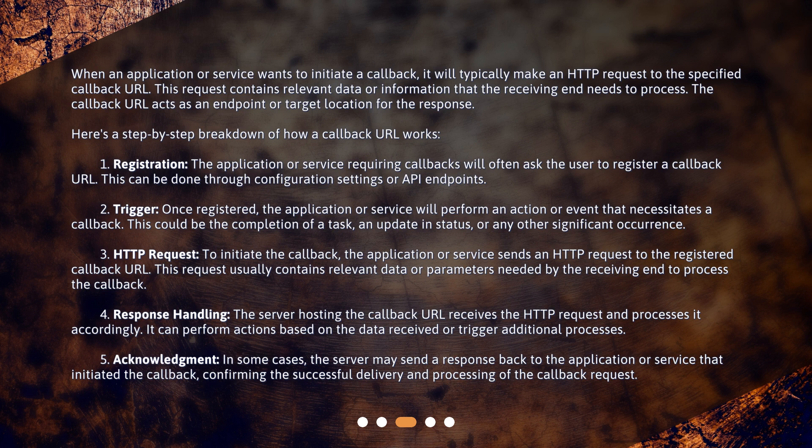Step 1: Registration. The application or service requiring callbacks will often ask the user to register a callback URL. This can be done through configuration settings or API endpoints. Step 2: Trigger. Once registered, the application or service will perform an action or event that necessitates a callback. This could be the completion of a task, an update in status, or any other significant occurrence.